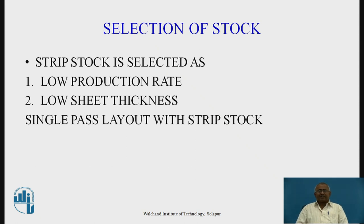The next stage in design is selection of stock. We are going for strip stock. The justification is that our production rate is low — 10,000 pieces per day, which is less than 25,000 parts per day. Additionally, our sheet thickness is 1.2 mm, which is less than 1.5 mm, so sheet thickness is also low. Therefore, we can easily go for strip stock, and along with strip stock, we are going for a single pass layout.